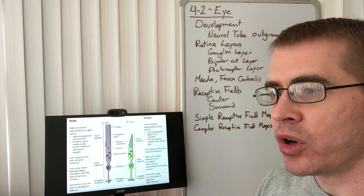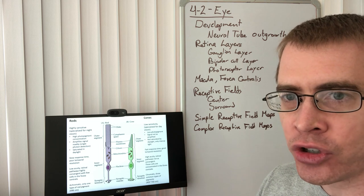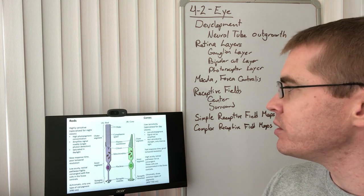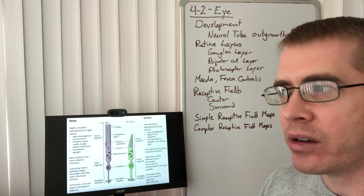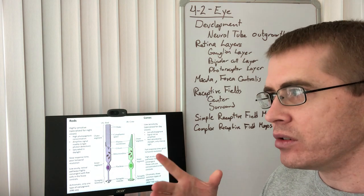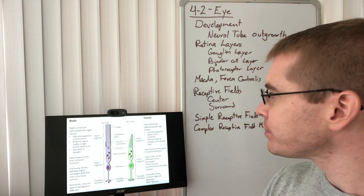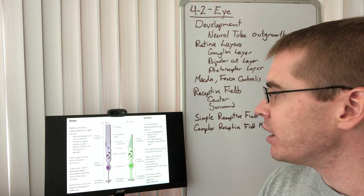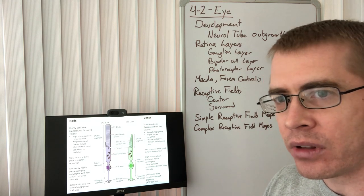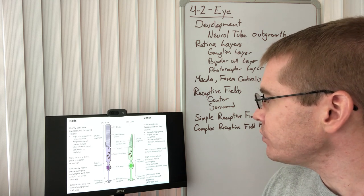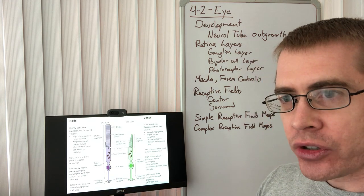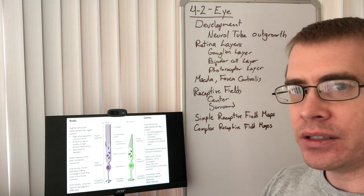Cones, on the other hand, can respond to multiple wavelengths of light depending on the rhodopsin molecules within them — these are the photosensitive molecules within the cones. Cones are less sensitive, which is why they don't work as well at night, but during the day we can see colors more clearly because they're not saturated by the intensity of daylight. They have a faster response time and high acuity, so these are what we use for daytime color vision. Cones are highly concentrated within the fovea centralis, and we use them a lot for looking at fine details.